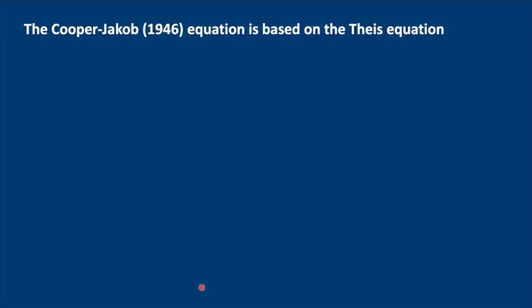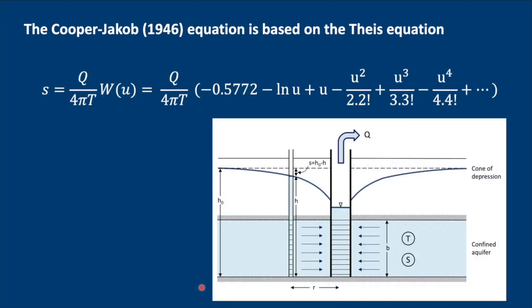The Cooper-Jacob equation is based on the Theis equation, shown here. Just to remind you, S is the drawdown at any distance R from the pumping well at any point in time T after the beginning of the pumping test. An important thing is our well function here, where U equals R squared times the storativity, divided by 4 times the transmissivity times time.